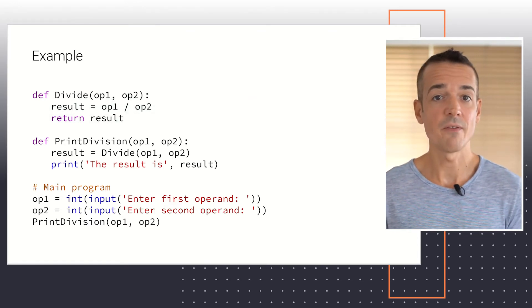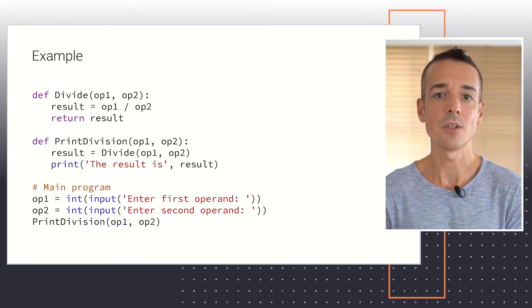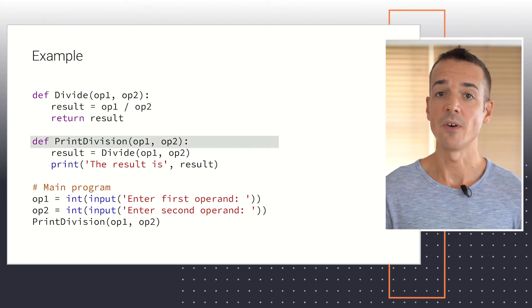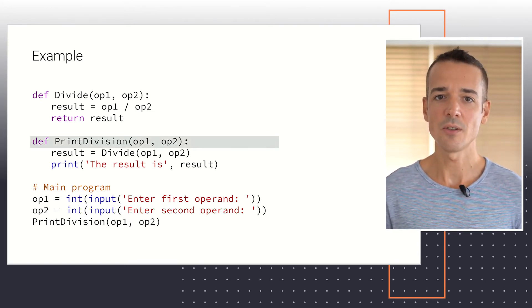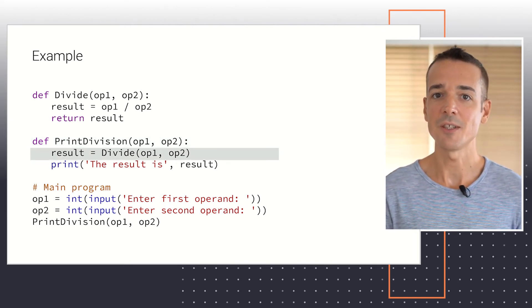As you know, depending on the combination of values passed in the arguments, the first line of code in the body of this function is susceptible to causing an exception. Another function called PrintDivision also takes two input operands. It calculates their division by invoking function Divide.